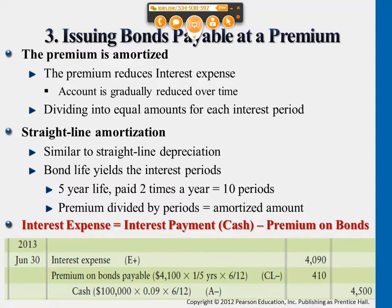The premium on bonds payable account earlier had a $4,100 credit balance. After each journal entry we deduct $410 every half a year. After 10 entries, this premium on bonds payable becomes zero, and that's the time point when bonds payable matures.